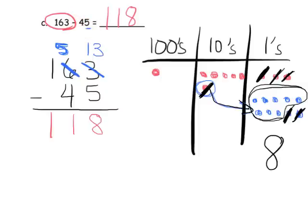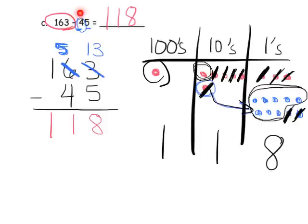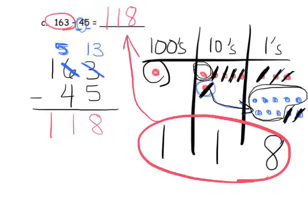Now it says take away four tens, so there are our four tens — we take away four: one, two, three, four — leaving us with one ten left over. Then we have 100 left over because the original problem doesn't say to take away any hundreds. So there's our answer: 118 — and we knew that all along.